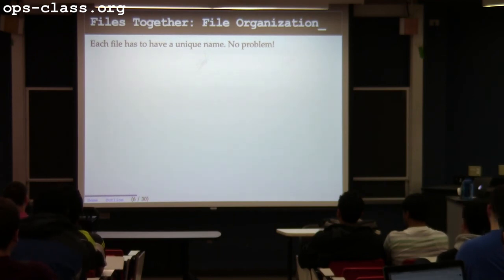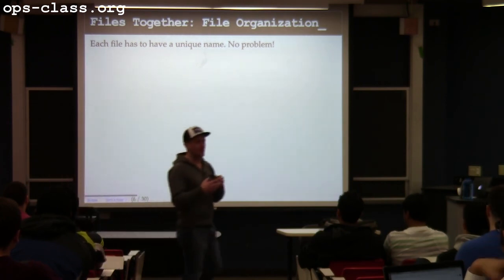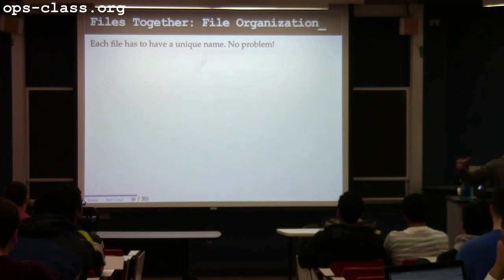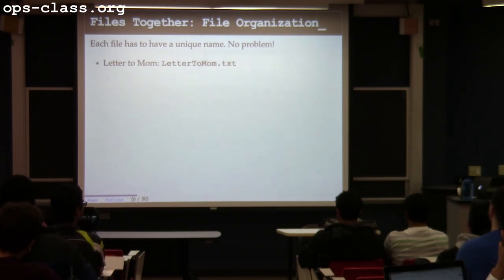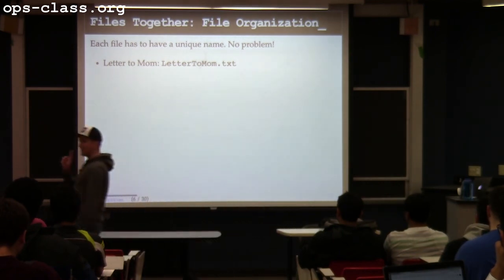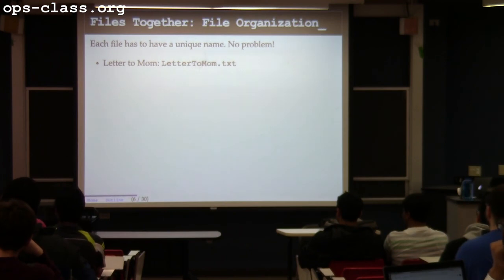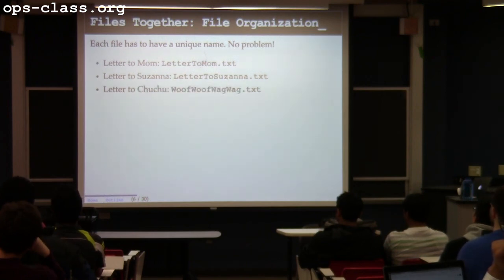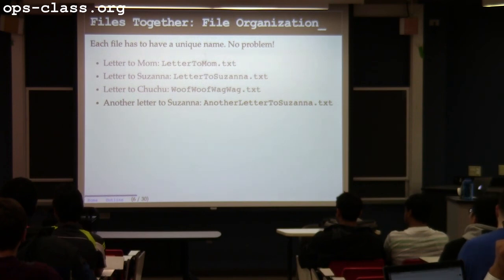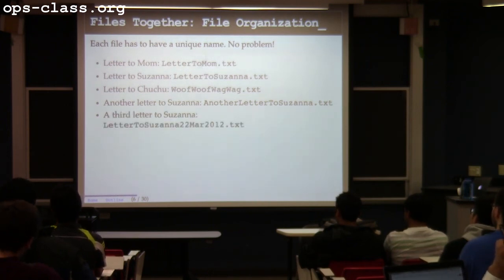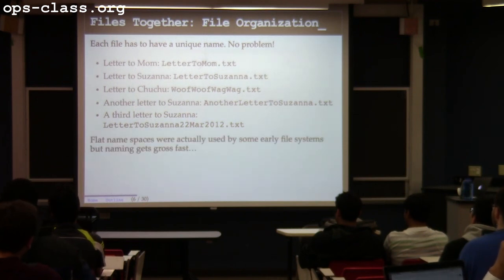Let's talk about file organization. We know that in order to refer to a file, I need a name, and the file name is actually the full path to the file. Early file systems did weird things with names. For example, there were some where every user had one directory, and inside that directory it was up to you to create a naming scheme for all your files. If you imagine being forced to put all your files in one directory — these flat namespaces just don't work very well. So we decided to start using hierarchical namespaces.